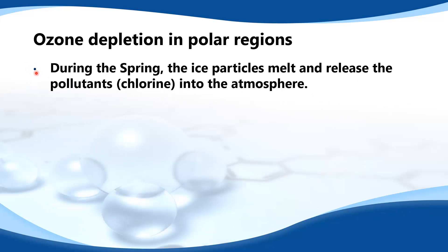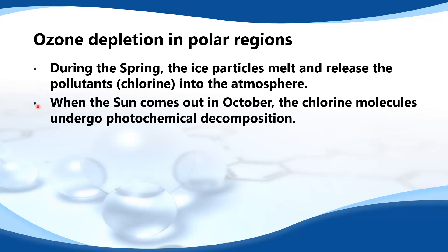During the spring the ice particles melt and release the pollutants into the atmosphere. When the sun comes out in October the chlorine molecules undergo photochemical decomposition.